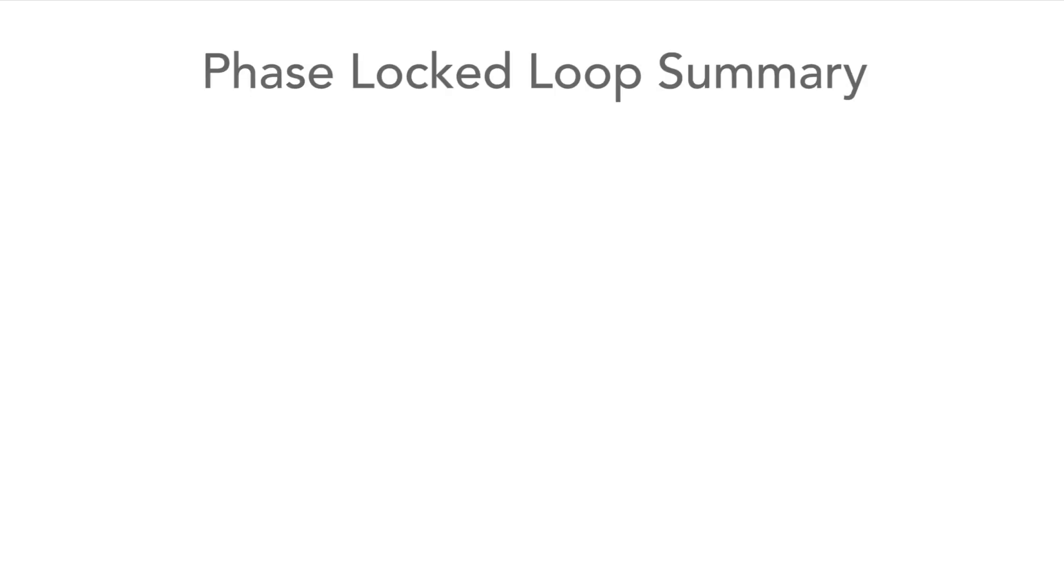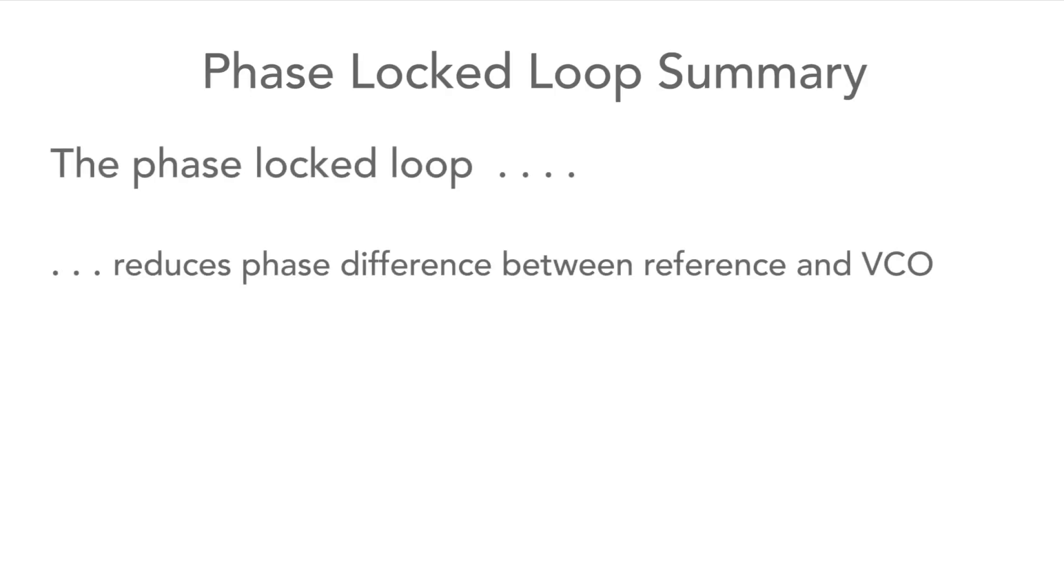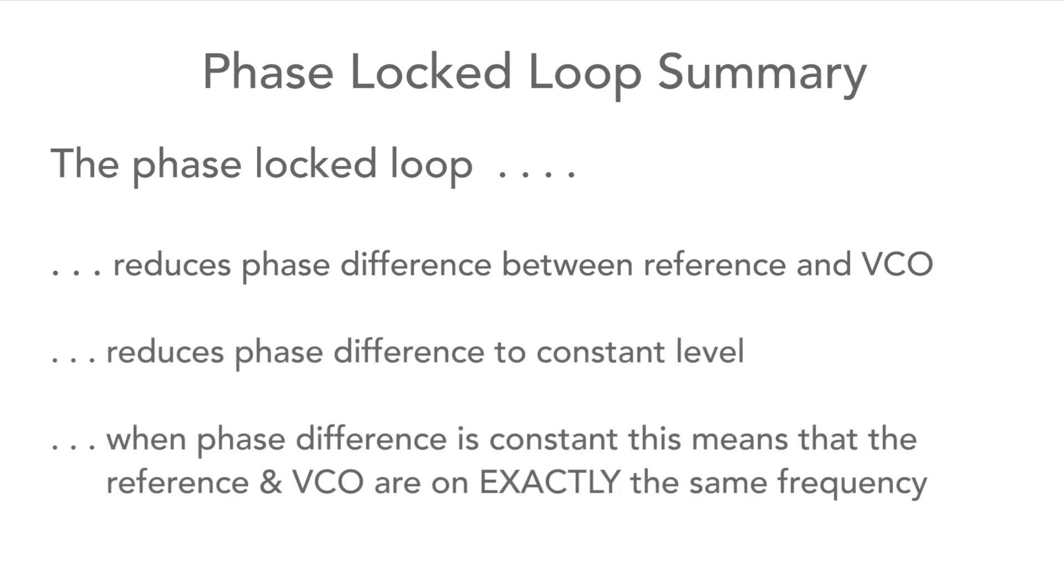To summarize, we've seen that the loop fights to reduce the phase difference seen at the inputs to the phase detector, changing the frequency of the VCO so that the phase difference reduces to a constant level, where the VCO is running on exactly the same frequency as the phase comparison frequency, which in this case is the same as that of the reference oscillator.